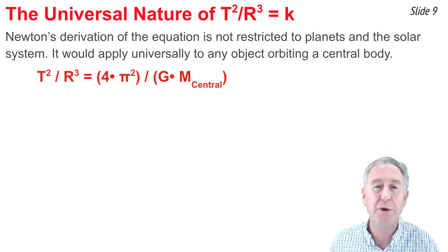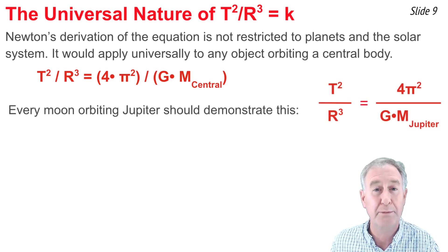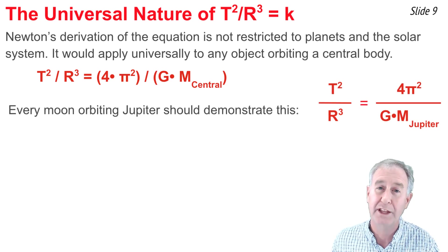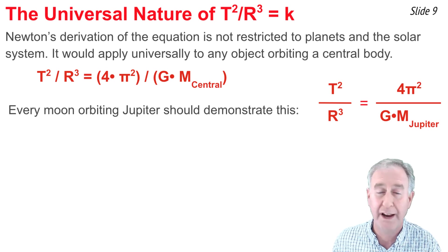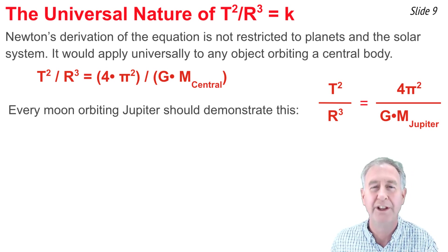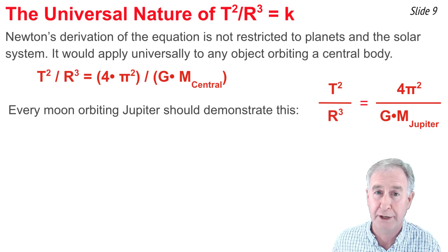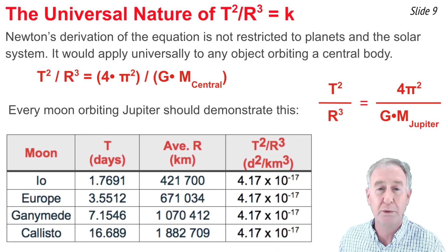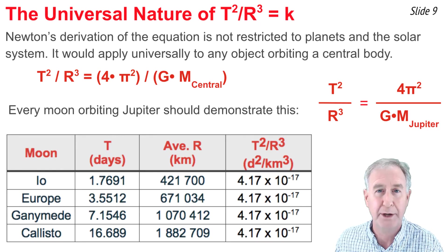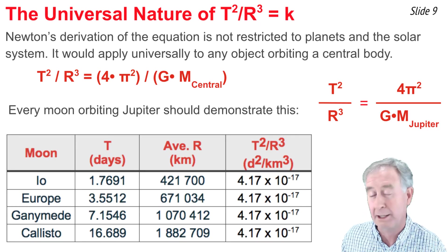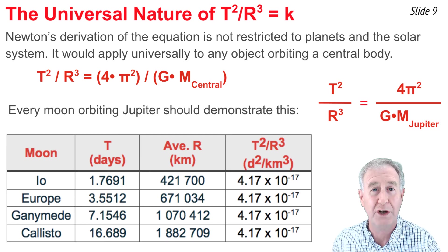If we were to take the equation and apply it to the moons of Jupiter, we could say that the T² / R³ ratio for every moon of Jupiter should be equal to 4π² divided by G divided by the mass of Jupiter. Here's a table with four moons of Jupiter listed. We see the period, we see the average radius, and in the last column, we see the T² / R³ ratio.